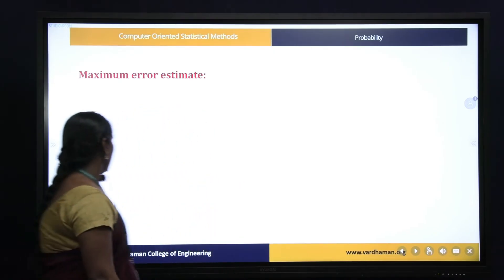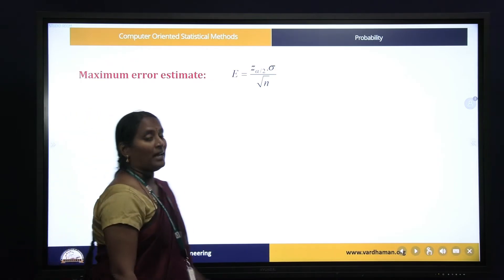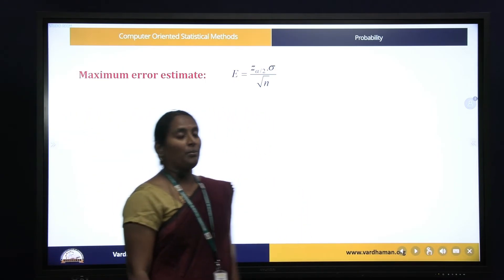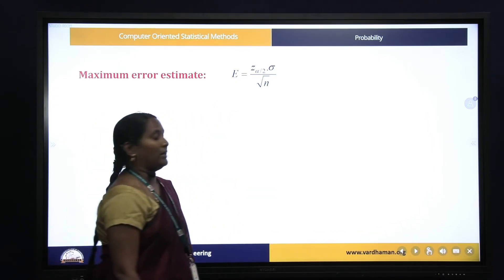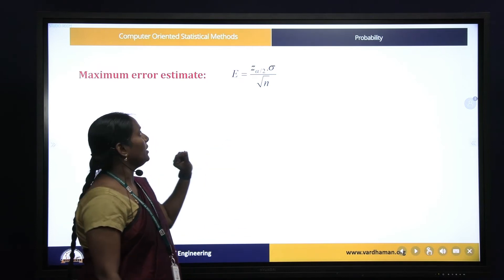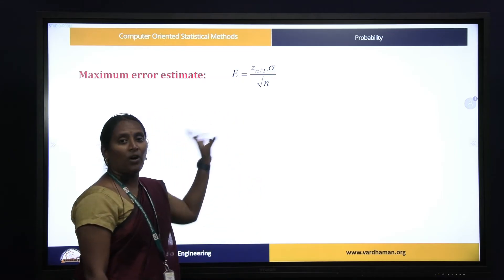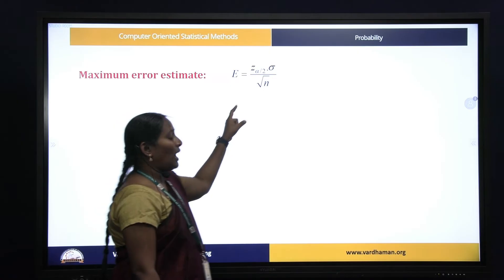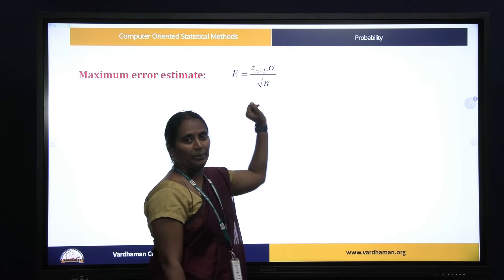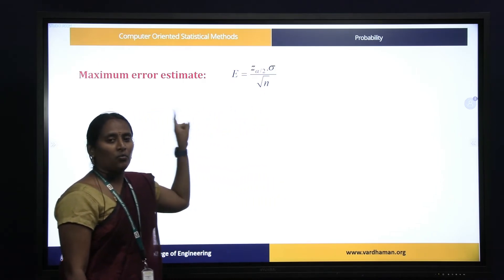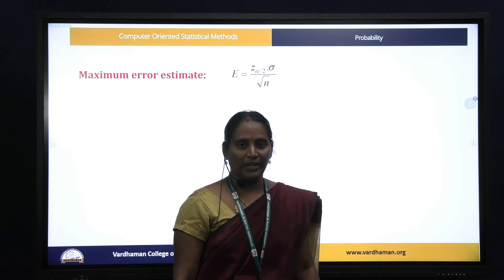Now let us see the maximum error estimate. Given the sample size and the population standard deviation, the maximum error estimate is found using the formula E_max = z_alpha * (sigma / sqrt(n)). Using this formula we can also find the confidence interval. To find z_alpha/2: z_alpha/2 = E_max * sqrt(n) / sigma.